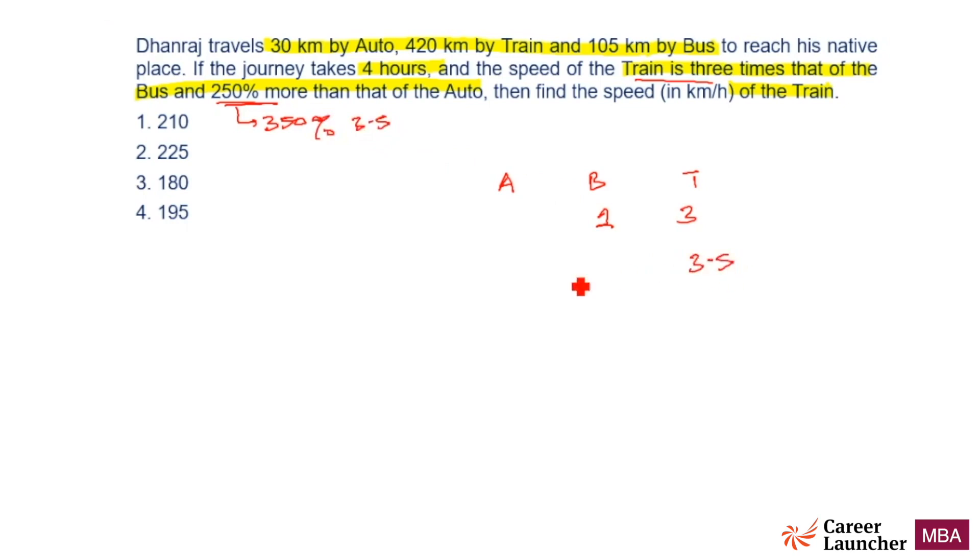250 percent more means it is 3.5 times. So if the speed of train is 3.5, the speed of auto should be 1. To find the combined ratio, multiply the first one with 3.5 and the second one with 3.